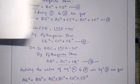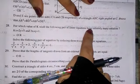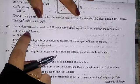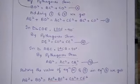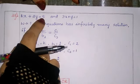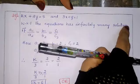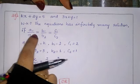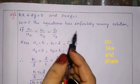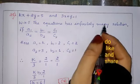Question number 28: for which value of K will the pair of linear equations KX + 2Y = 5 and 3X + Y = 1 have infinitely many solutions? We know that for infinitely many solutions the condition is A1/A2 = B1/B2 = C1/C2.